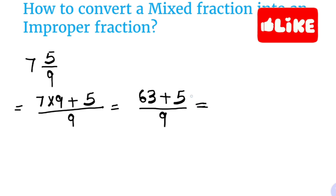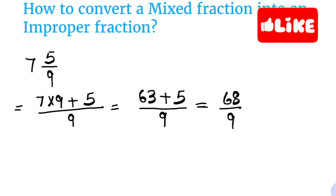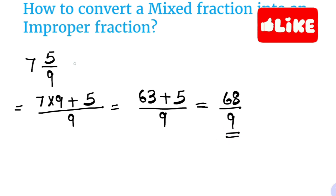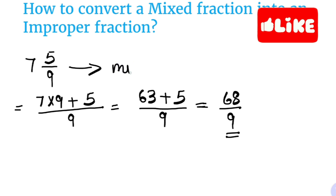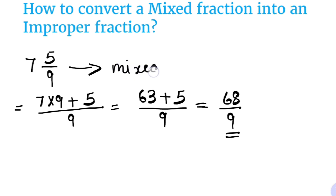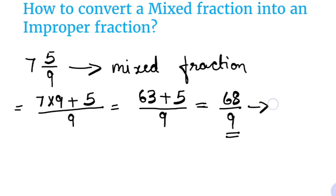We add the numerator which is 5, and the denominator will be the same, that is 9. So the numerator of our answer will be 68, giving us 68 by 9, which is an improper fraction. So our answer is 68 by 9. We have converted 7 5/9, a mixed fraction, into the improper fraction 68 by 9.